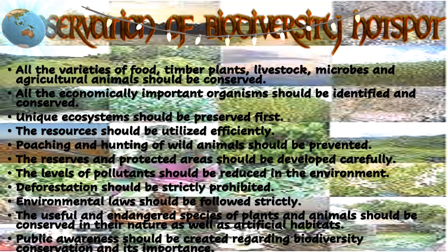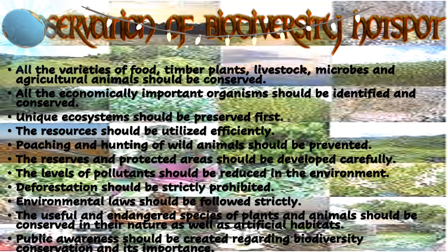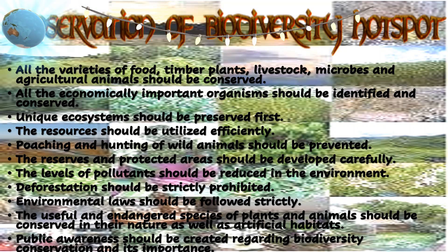Now let's look at how we can conserve biodiversity and make it a safe place. There are many ways to conserve biodiversity: all varieties of food, timber, plants, livestock, microbes, and agricultural animals should be conserved. Reserves and protected areas should be developed carefully. Public awareness should be created regarding biodiversity conservation and its importance. Deforestation should be strictly prohibited. Poaching and hunting of wild animals should be prevented. Environmental laws should be followed strictly. These are some ways we can help conserve our biodiversity, but there are numerous other ways to support the government in this effort.